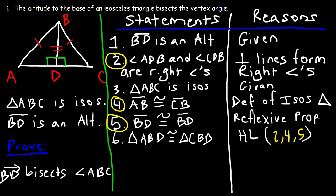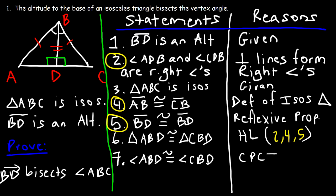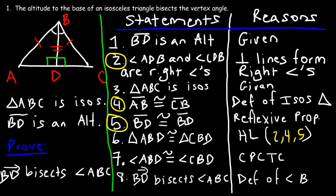Now that we've proven that the two triangles are congruent, we can show that these two angles are congruent. We can say that angle ABD is congruent to angle CBD, and the reason is CPCTC — corresponding parts of congruent triangles are congruent. Now we make the last statement: ray BD bisects angle ABC, since these two angles are congruent. The reason is the definition of an angle bisector.